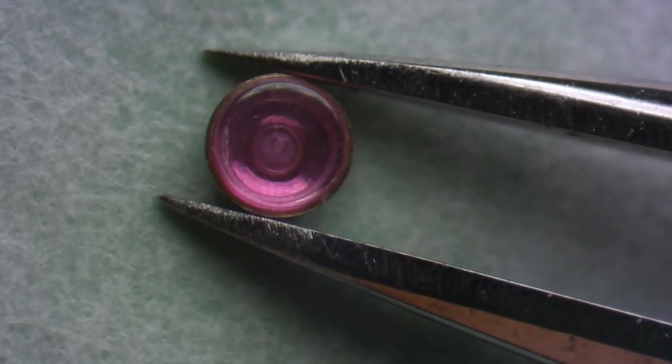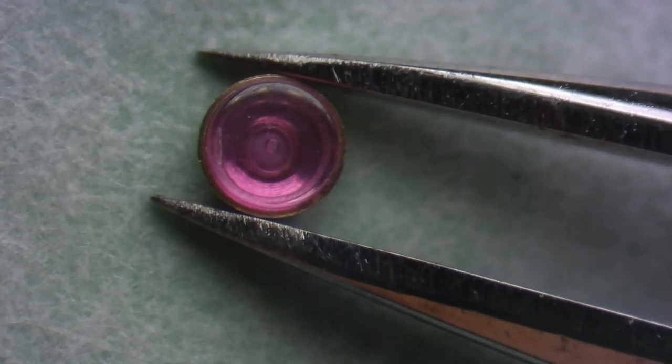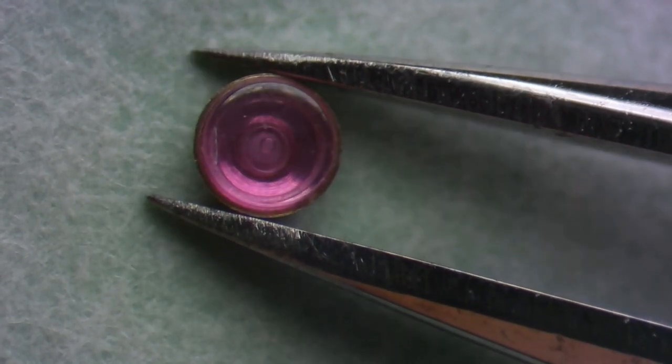Now looking at the end stone, if you look at the pivot hole you'll notice a ring of oil directly around it. That's what you're looking for.